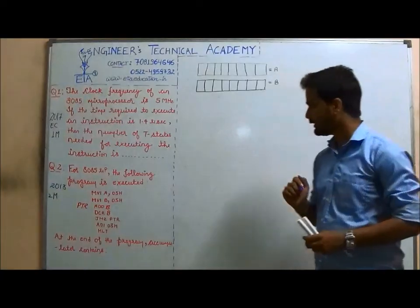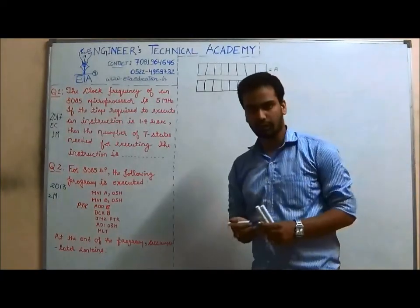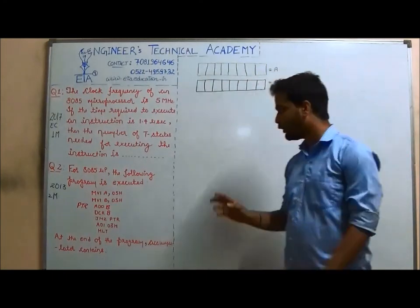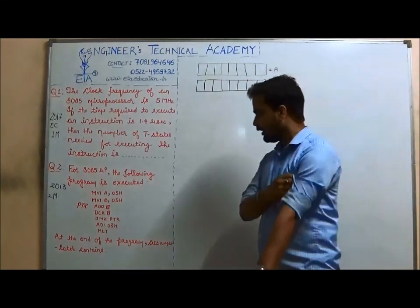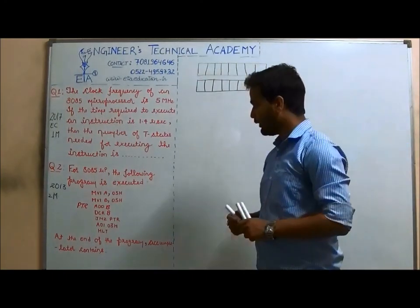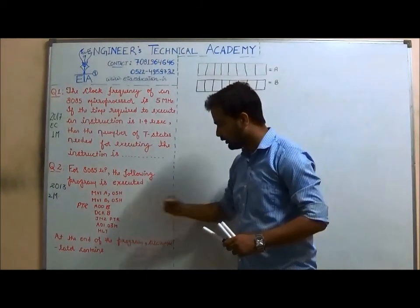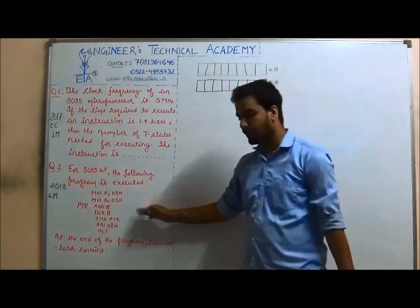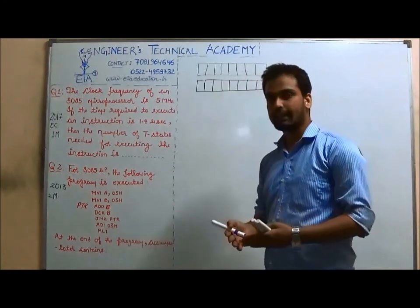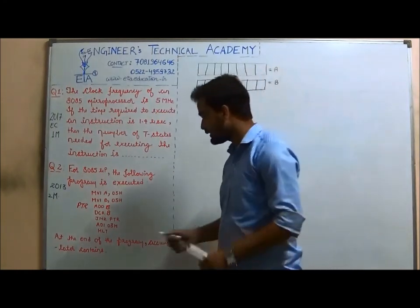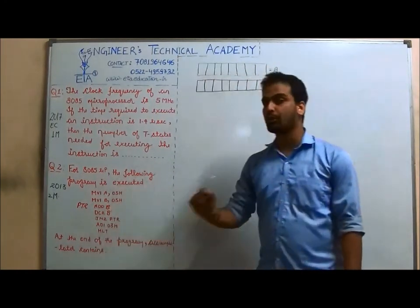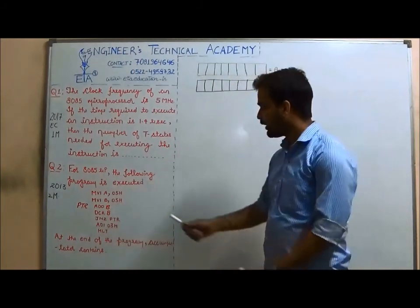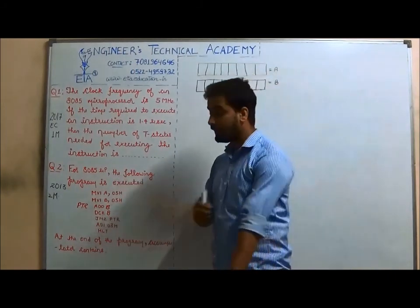Now we will have our second question solved. It is a programming question and we will be very cautious while solving it. We will do a dry run of these instructions, meaning we will execute them in the same way as the microprocessor executes them.